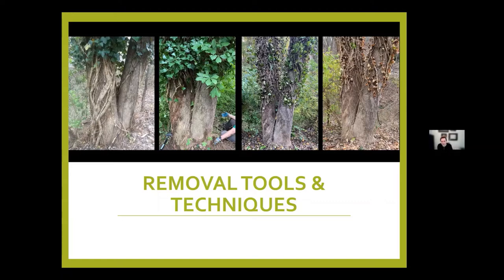For small infestations of vines, it can be hand pulled. If there's fruit present on the vine — certainly for English ivy — it's really critical that you bag up that ivy and not leave it in the environment. For woody vines, it is effective to cut the vine to cut off nutrients to the upper portion. Oftentimes, systemic herbicides will be required to be painted to the cut surface of that vine, and sometimes foliar treatment may be necessary as well.